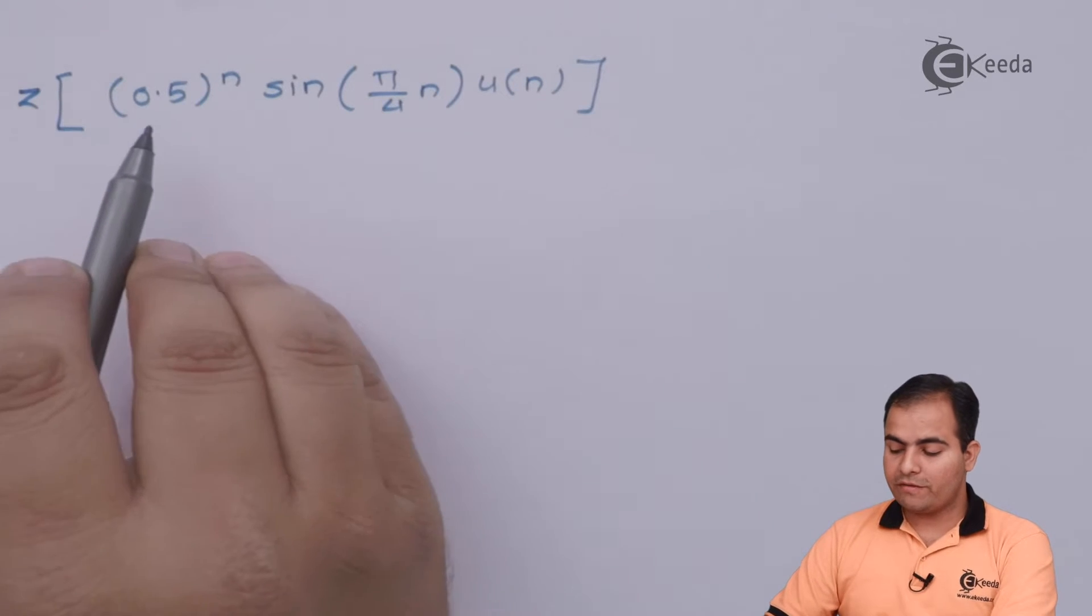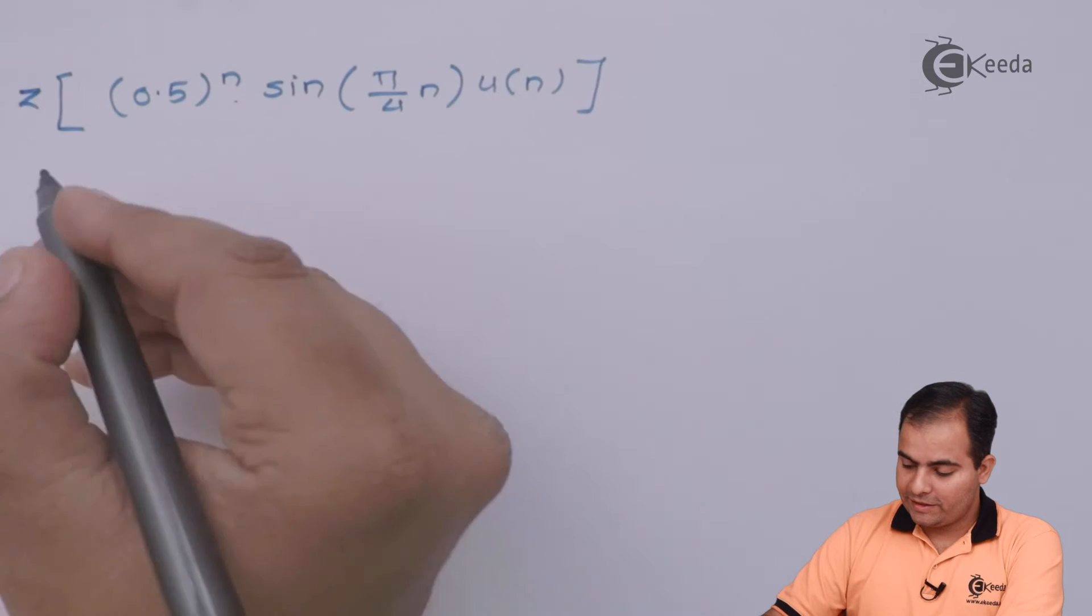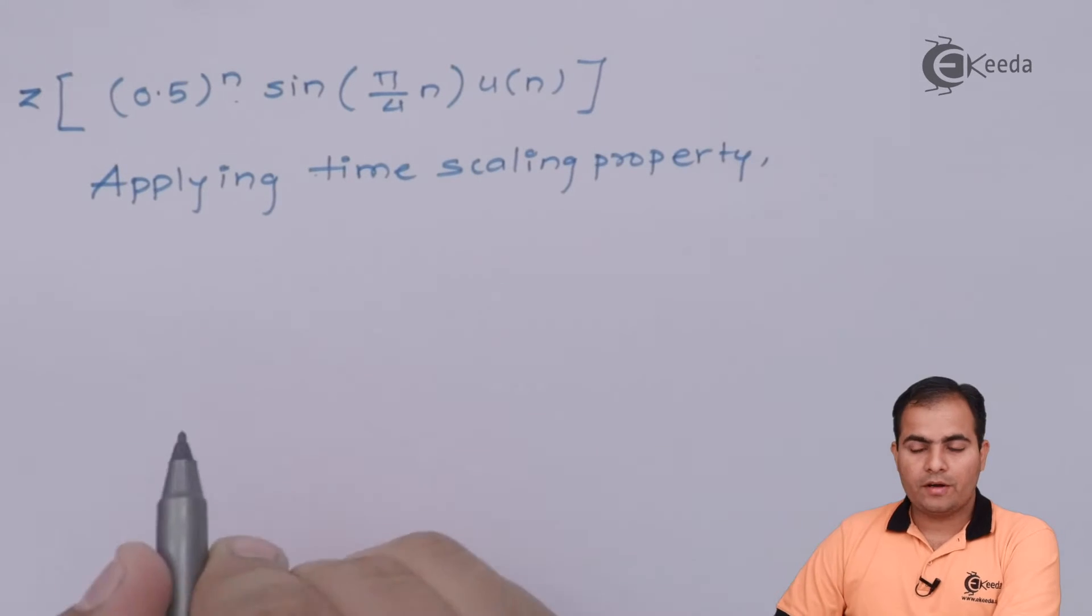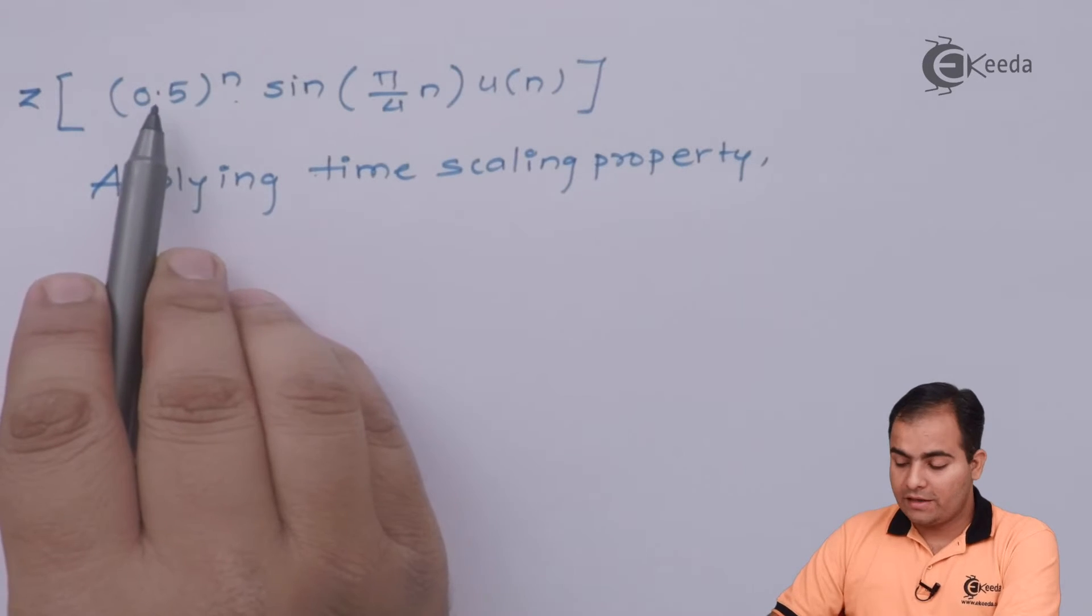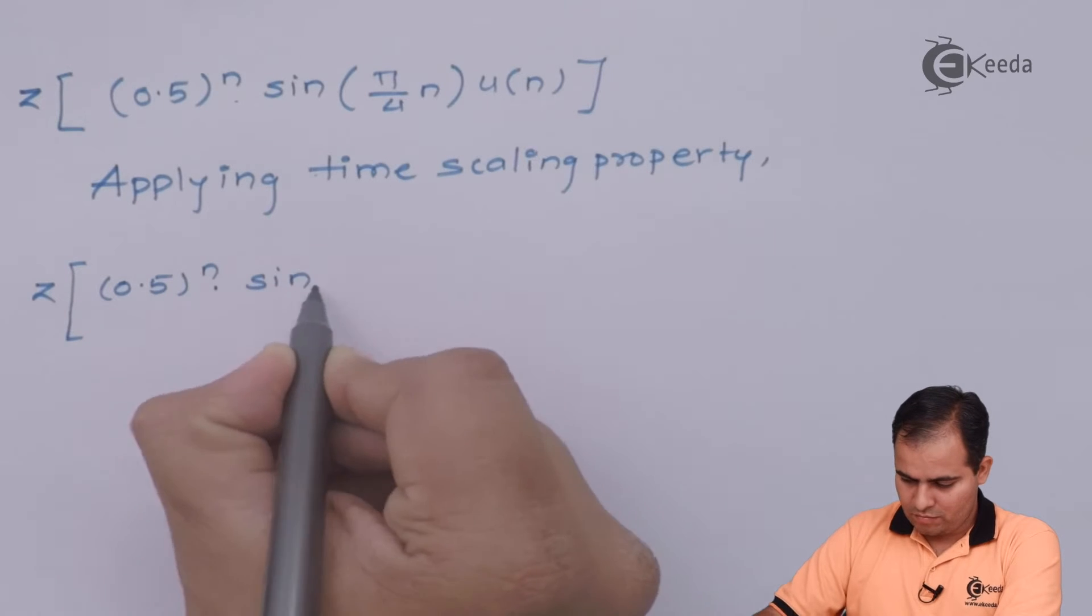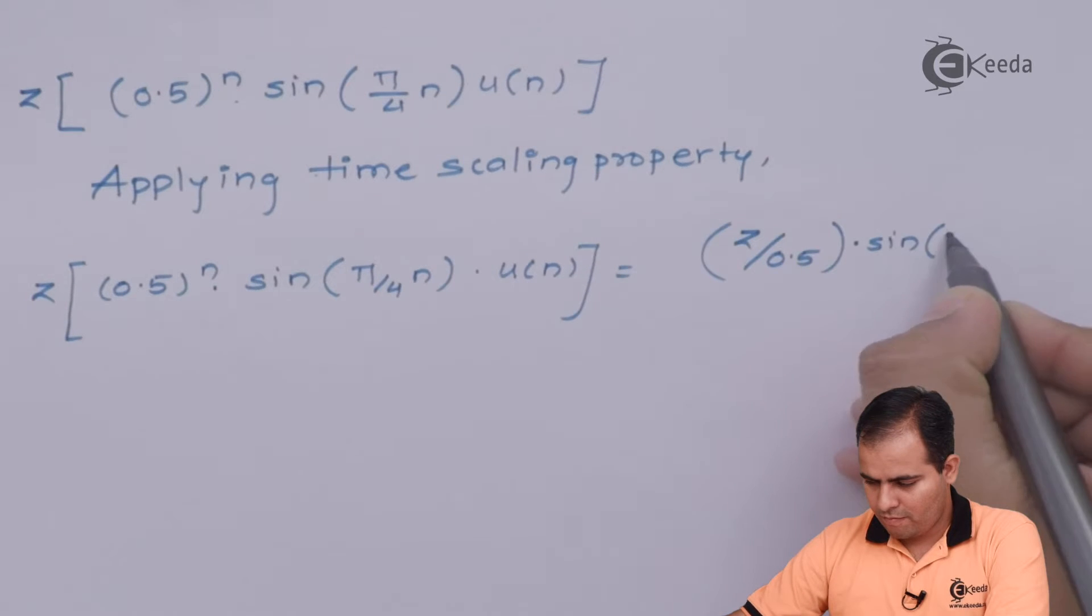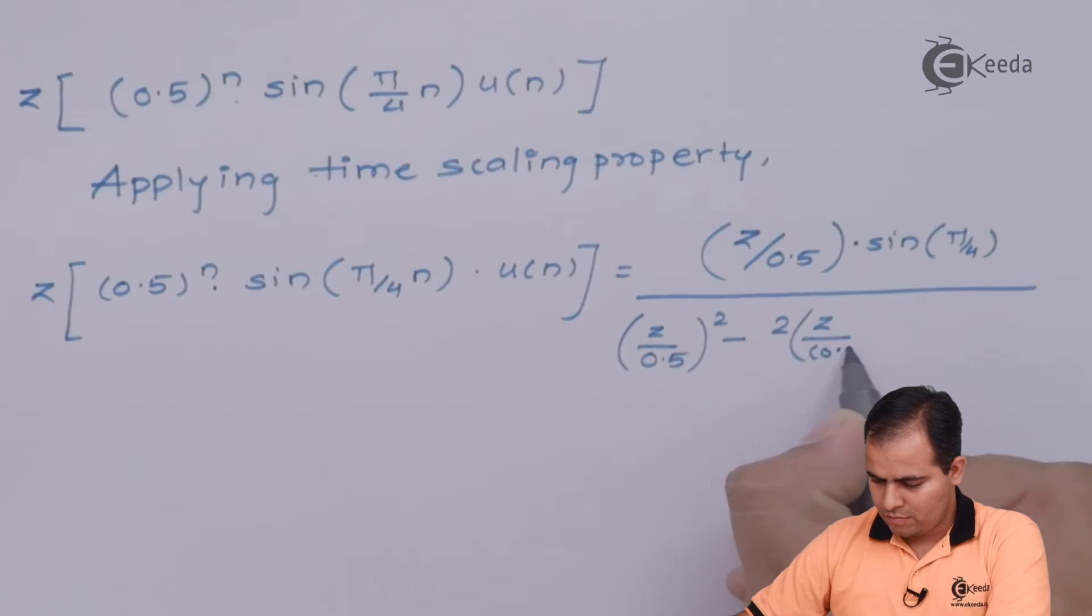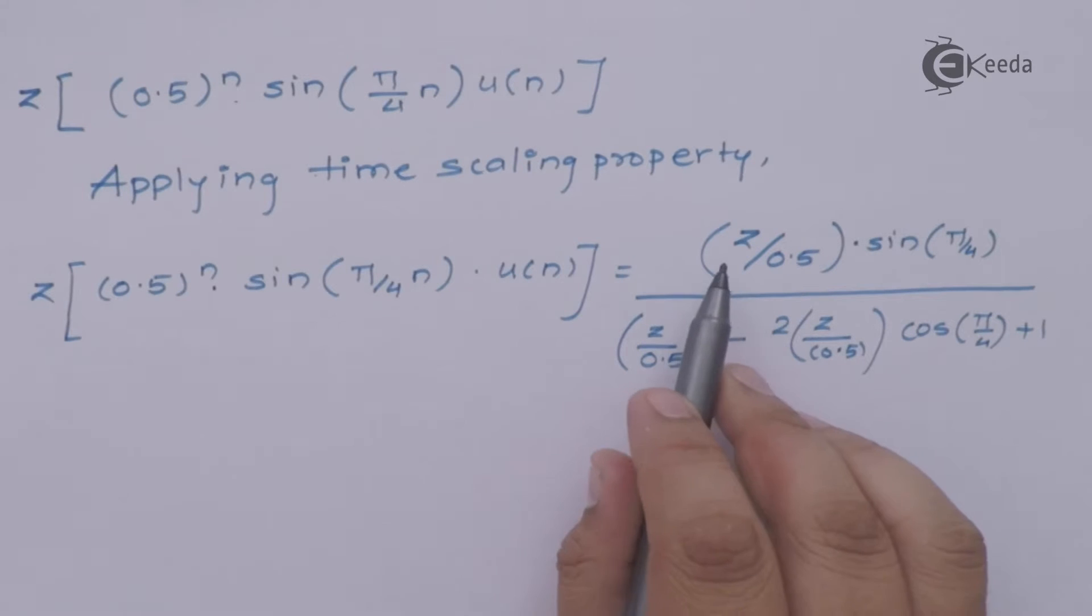Our question was (0.5)^n · sin(π/4 · n) · u(n). As I told you we will apply time scaling property. If we apply time scaling property then we can say that all Z will be replaced by Z/a, and here our a value is 0.5, so 1/0.5 is 2.